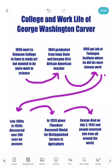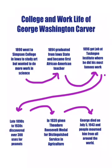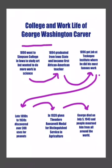In 1939 he was given the Theodore Roosevelt Medal for distinguished service in agriculture. Next arrow over: 'George died on July 5th, 1943, and people mourned him from all around the world.' Now I have those arrows connecting the boxes, but another option I could have done instead is something more like a timeline, with lines going across like this.